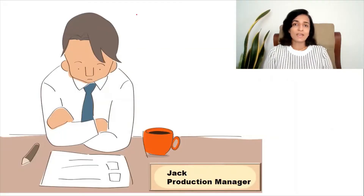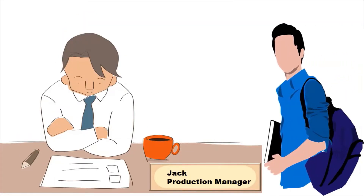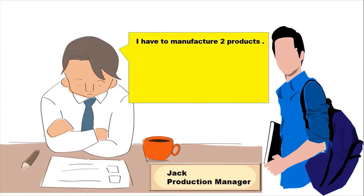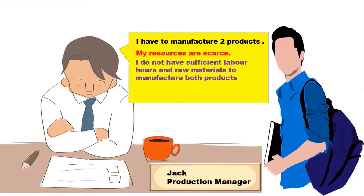Jack is working as the production manager in a company. You enter his office only to see him pondering over a sheet of paper. In your normal friendly tone you ask, hey bro what's the problem? He remains silent — he doesn't take his eyes off the paper. After a little while he replies: I have to manufacture two products. My resources are scarce. I do not have sufficient labor hours and raw materials to manufacture both products.